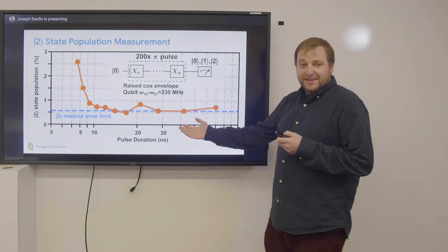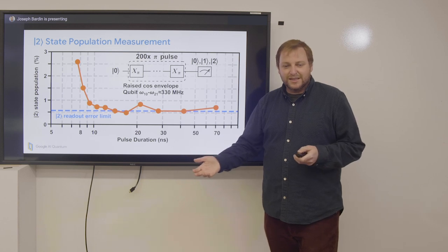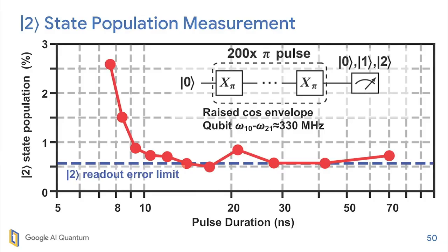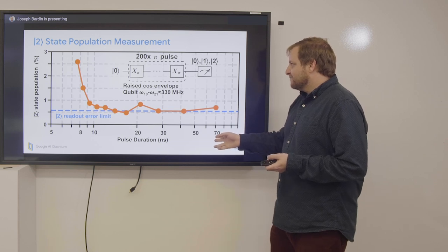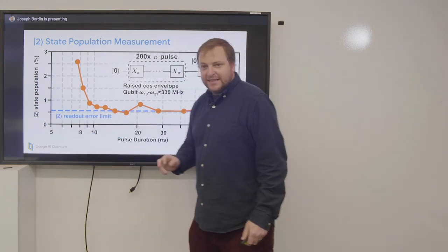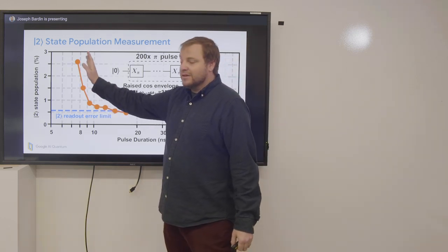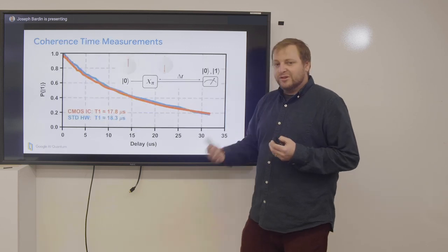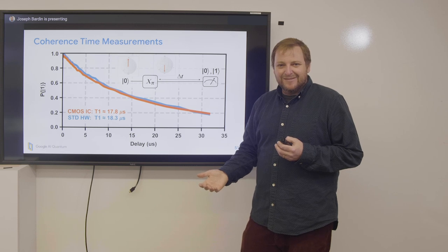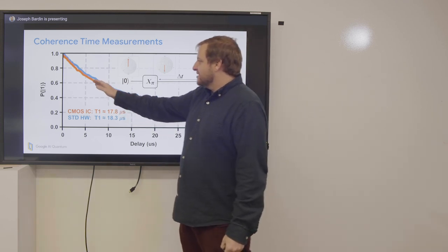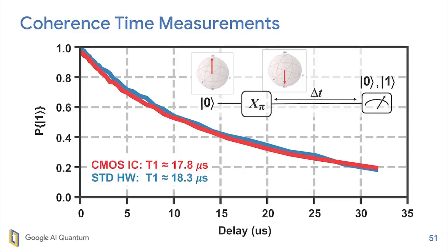Then we measured two state population. This is to characterize, do we have more bandwidth than we're expecting or something like that? Are we driving two state? What we did for this was applied a bunch of pi pulses. And at the end measure the probability of being in a two state. We swept the pulse duration from 70 nanoseconds down to about six nanoseconds. And we saw, as expected, not much two state population until we got really short pulses. So this is doing about what we'd expect. Finally, we want to make sure we weren't blasting the qubit with noise. That's a concern given that we have active current sources. And so we measured T1. And we got almost identical curves within the measurement error for the standard and custom hardware.